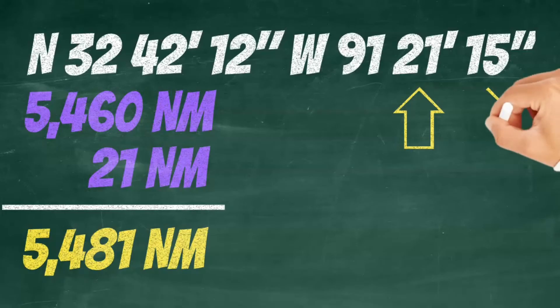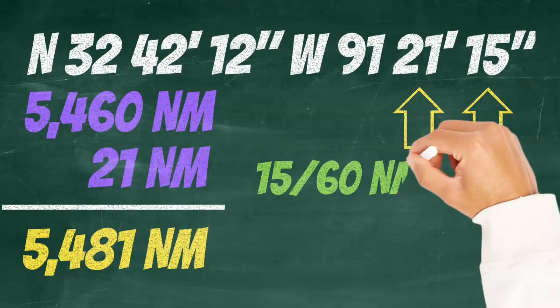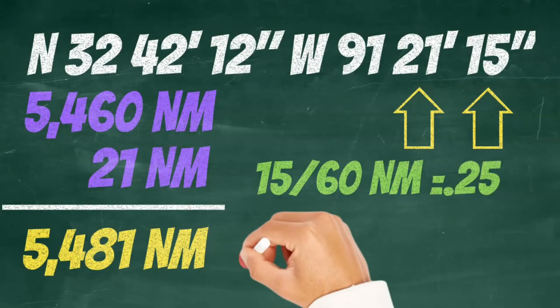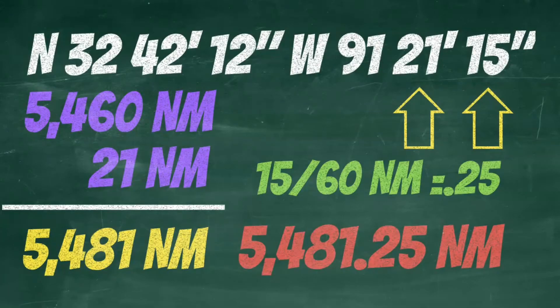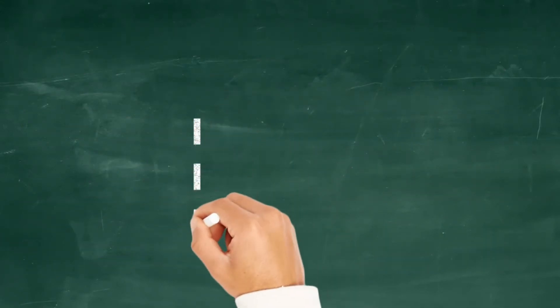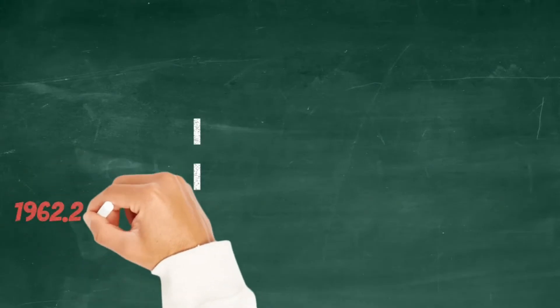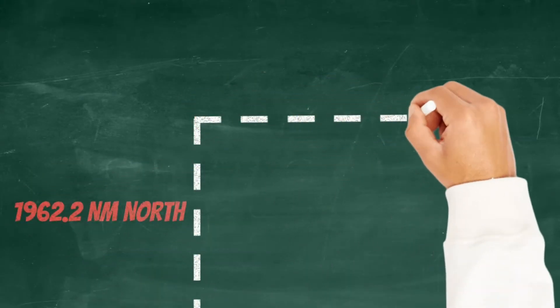Now let's attack these seconds. We've got 15 seconds. That means 15 sixtieths of a nautical mile. And this translates to 0.25. So let's just add this to our total to get 5,481.25 nautical miles. Now you can start to see how we can use these latitudes and longitudes to give someone our exact position on the globe.